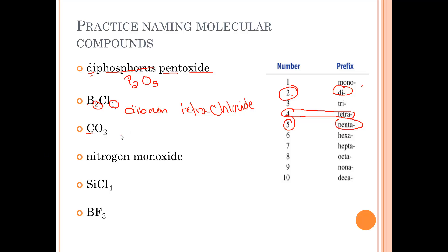Carbon. There's only one carbon, and if the first one is singular, we don't use a prefix. The second element is oxide. Oxygen becomes oxide. We take the base. There's two of them, so it's di. So carbon dioxide.